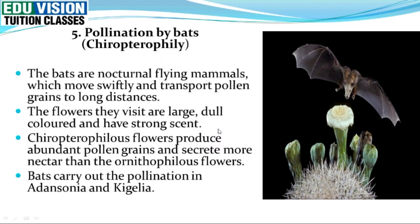Next is pollination by bats. This process is also called chiropterophily. Bats are nocturnal flying mammals, and in their capability pollen grains can travel long distances. Chiropterophilous flowers are large, dull-colored, and have a strong scent. These flowers produce more pollen grains and more nectar compared to other flowers. Examples of plants pollinated by bats include Adansonia and Kigelia.